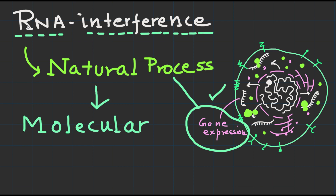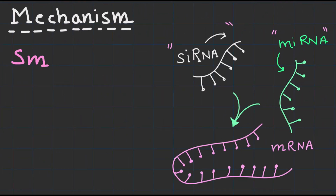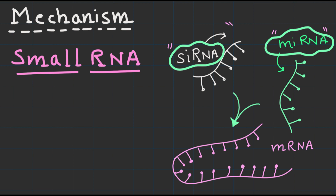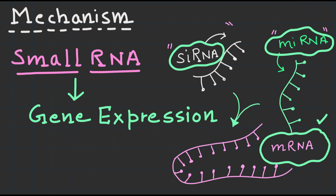RNAi has revolutionized the field of molecular biology. Let's begin by understanding the molecular mechanism behind RNA interference. At the core of RNA interference are small RNA molecules called small interfering RNAs, also known as siRNAs, and microRNAs, or miRNAs. These molecules play a vital role in regulating gene expression by targeting specific messenger RNA molecules.